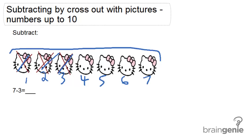So how many cats would be left? We have 1, 2, 3, 4 cats remaining. So 7 minus 3 must be equal to 4.